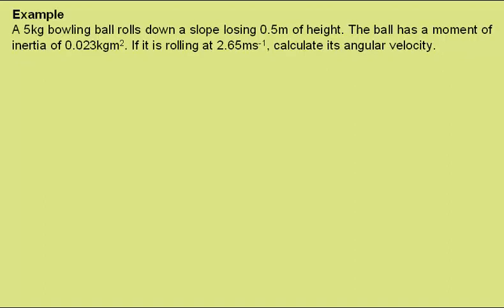Here's an example. A 5kg bowling ball rolls down a slope losing 0.5m of height. The ball has a moment of inertia of 0.023kgm squared. If it is rolling at 2.65m per second, calculate its angular velocity.